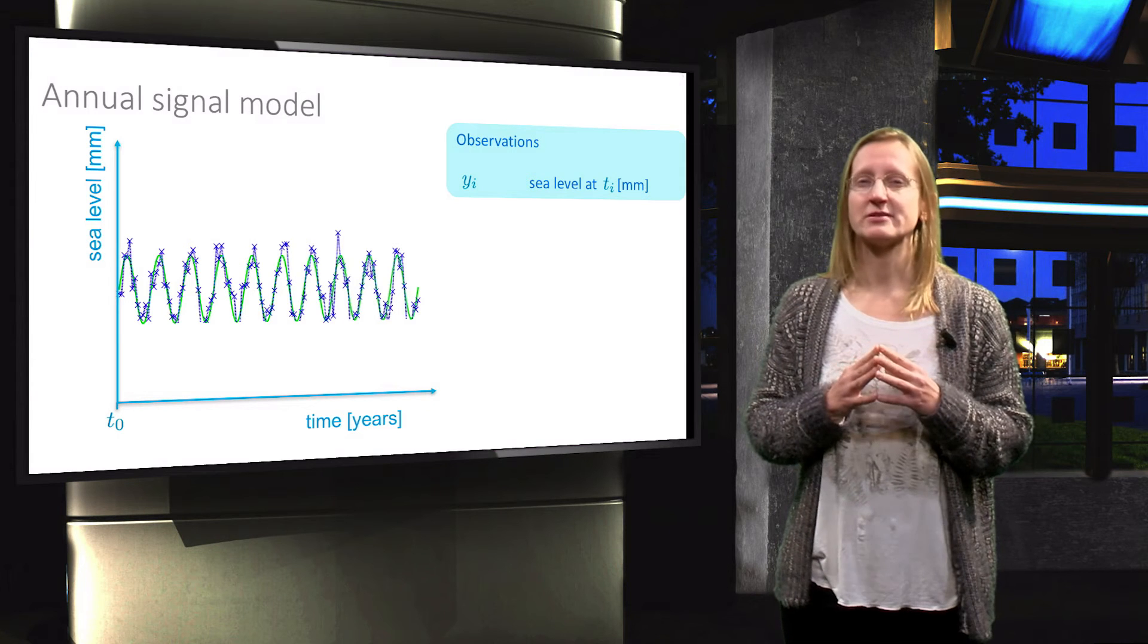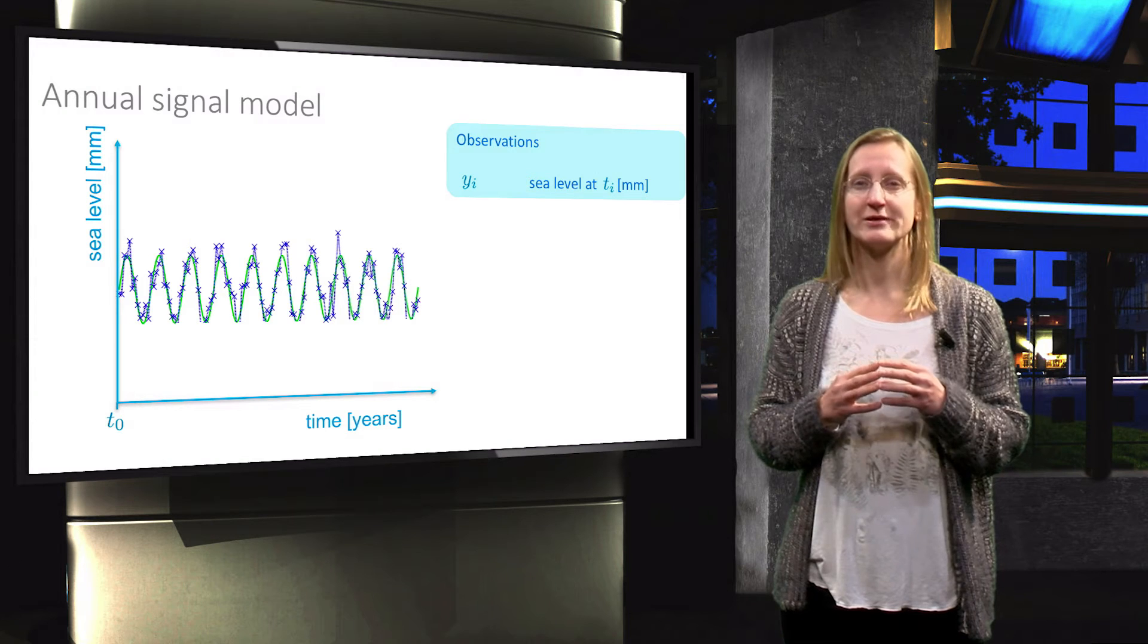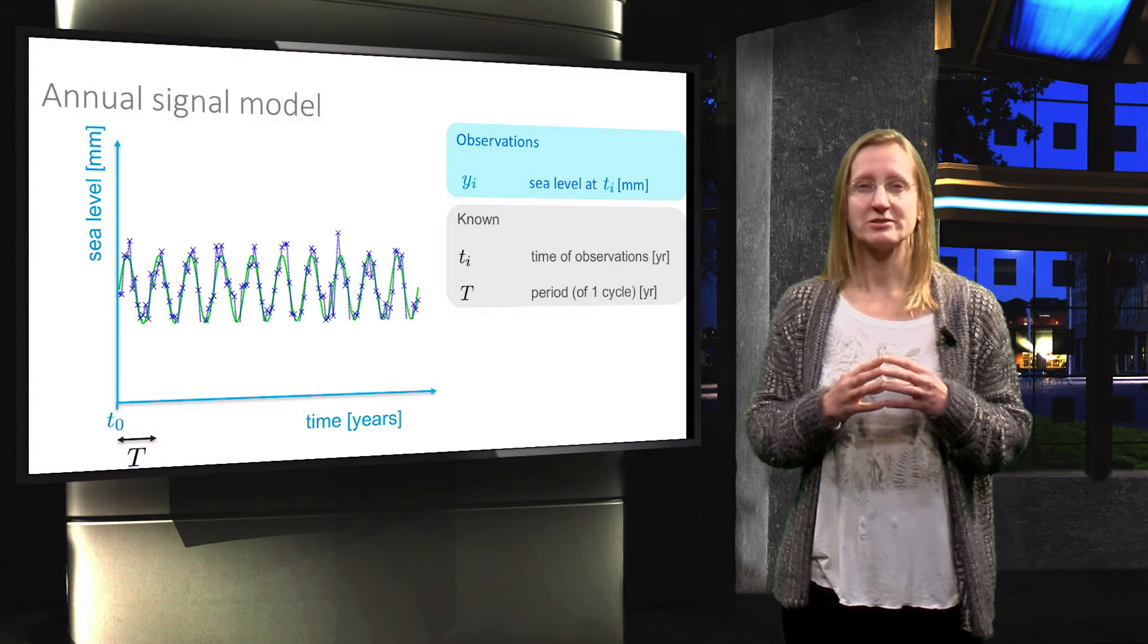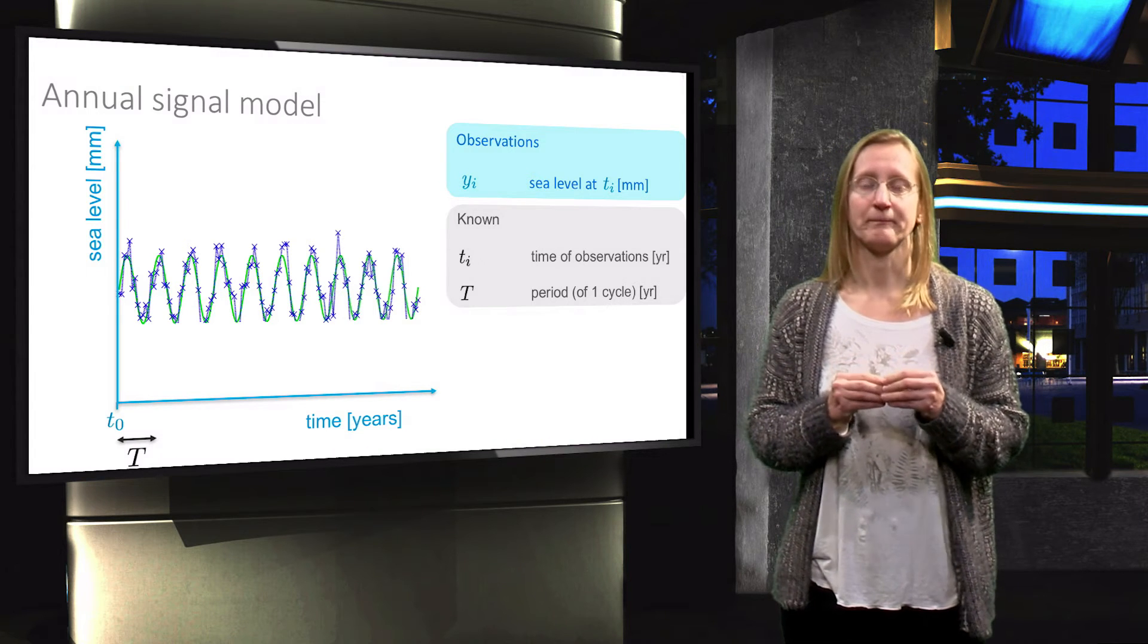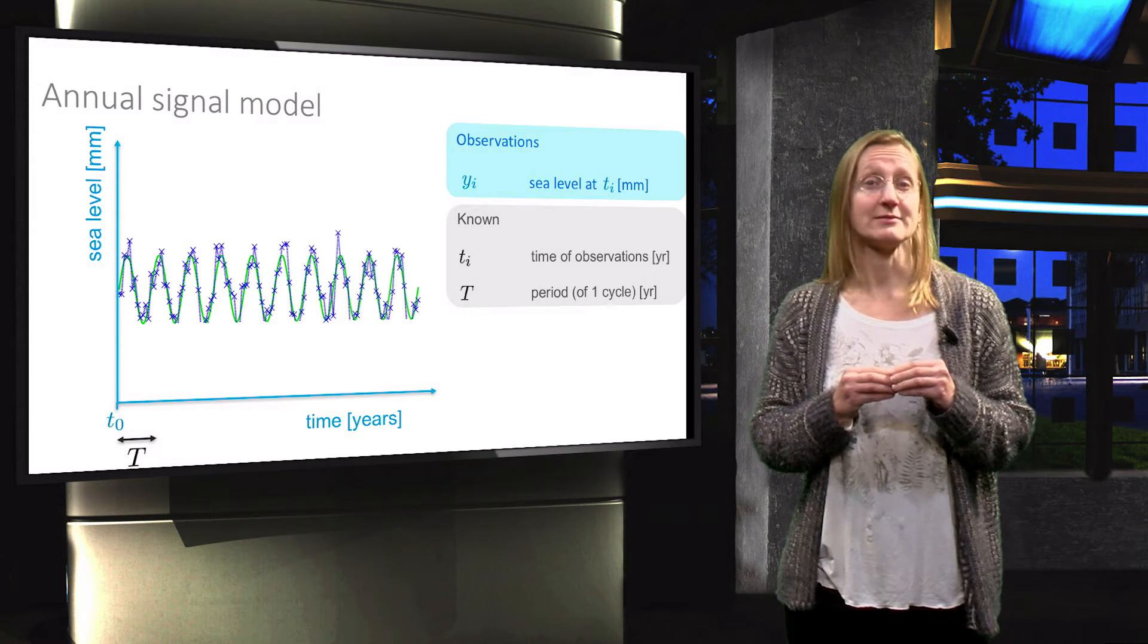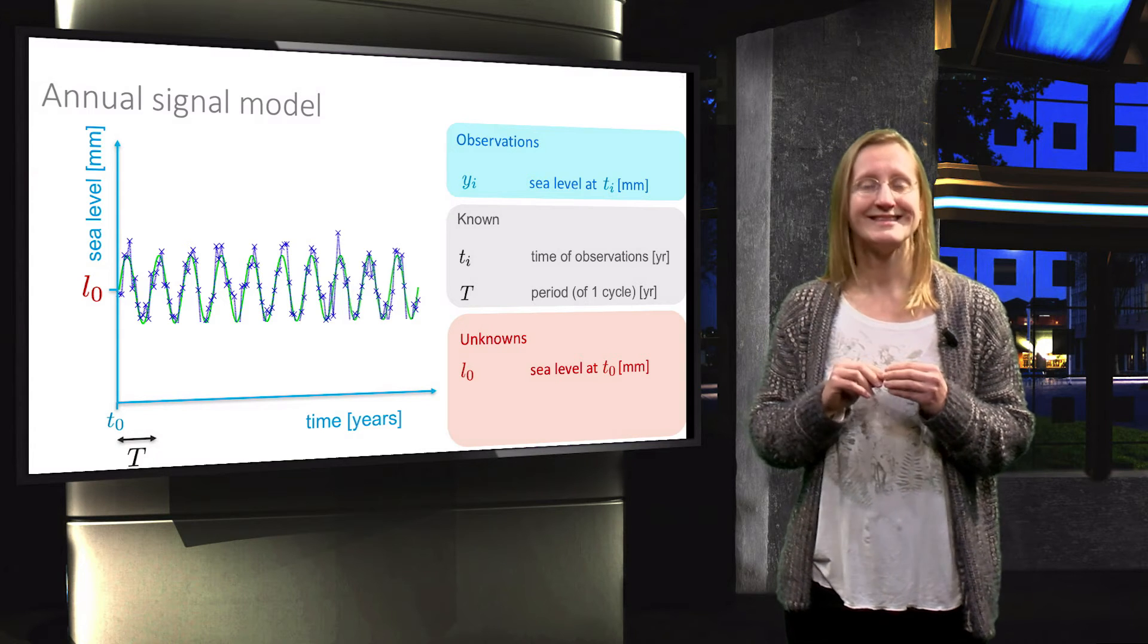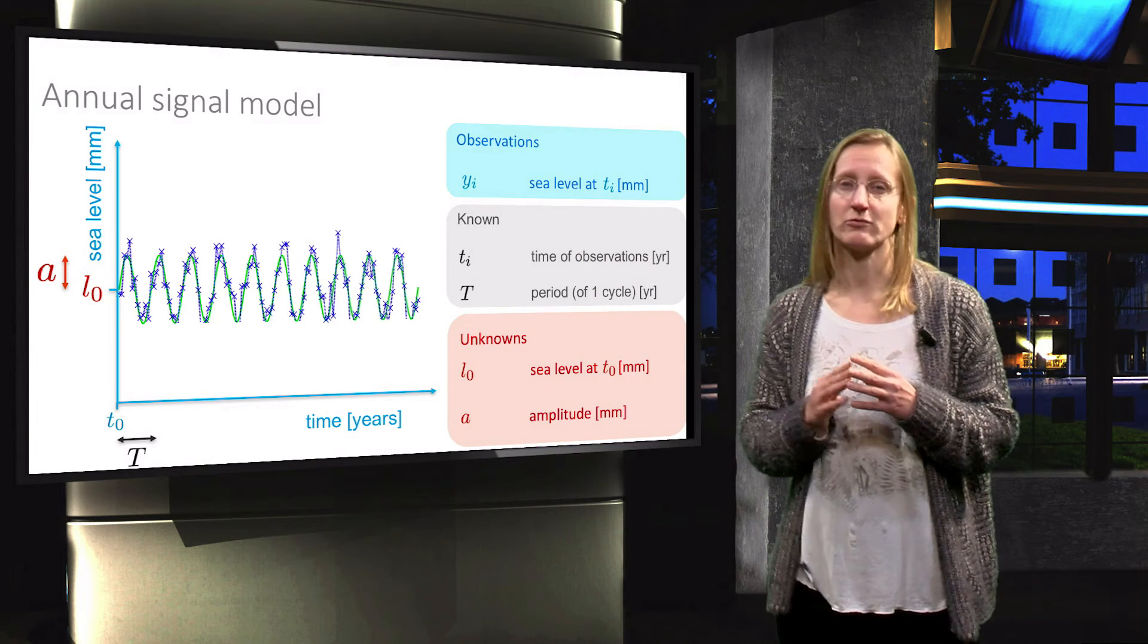Compared to the previous example, an additional known parameter is now the period T, since we are looking for an annual signal, hence T will be equal to 1 year. The unknown parameters are then again the sea level at T0, which we will call L0, plus the amplitude A of the annual signal, indicated on the left hand side of the graph.